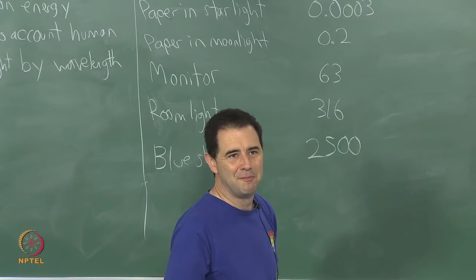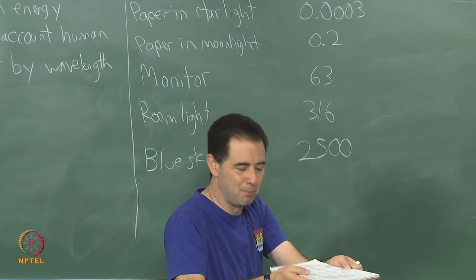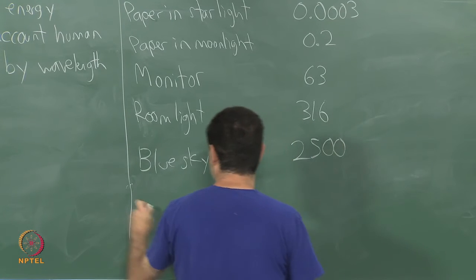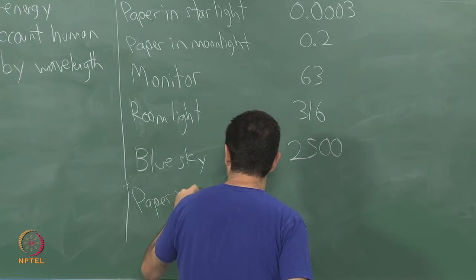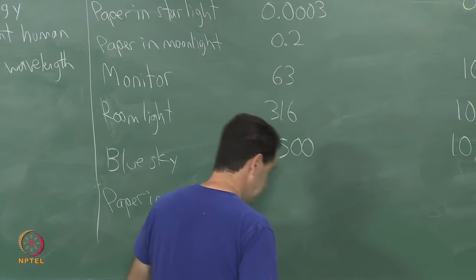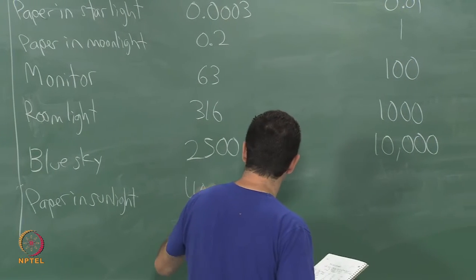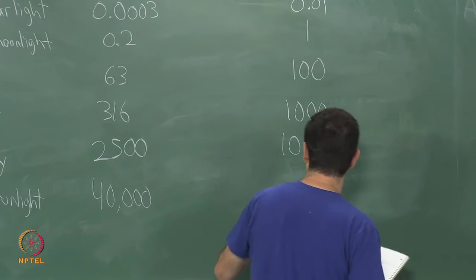If you sit outside, imagine here in Chennai sitting outside trying to read a book or something, you know perfect white paper hitting the sunlight - that is very very bright. Paper in sunlight, which gets up to 100,000.